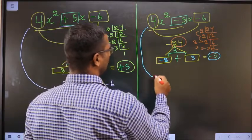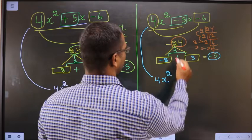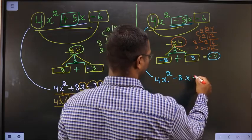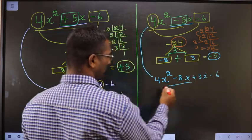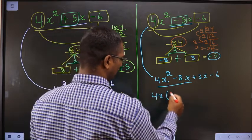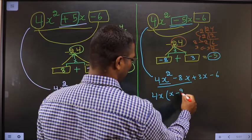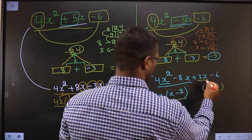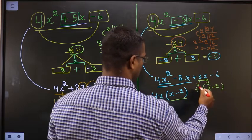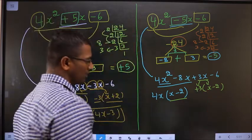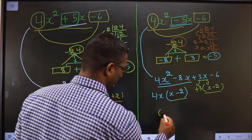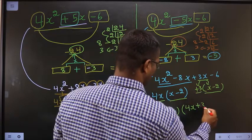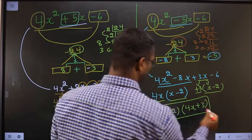Now this will change to 4x squared. In place of minus 5x, I will be writing minus 8x plus 3x minus 6. From these first 2 terms, I can take 4x common, so x is left and 2 is left, giving x minus 2. From 3x minus 6, x is gone inside means outside should be plus 3. Take x minus 2 common from both — left out with 4x and here plus 3. Thus, I have factorized, and this is the answer.